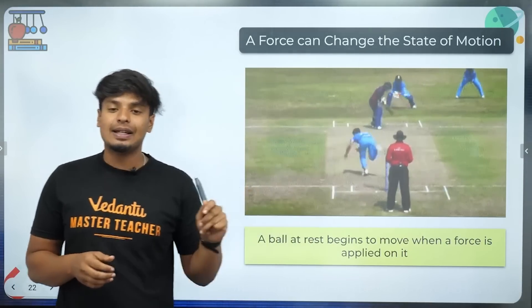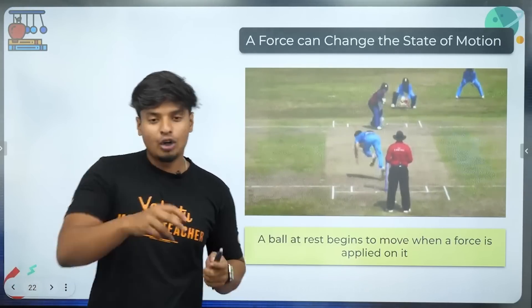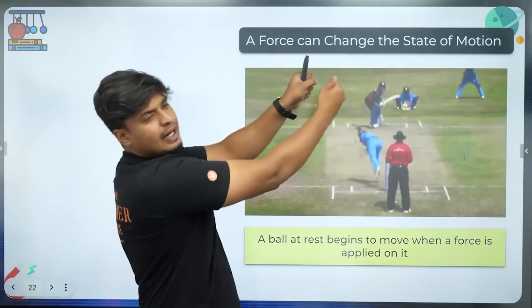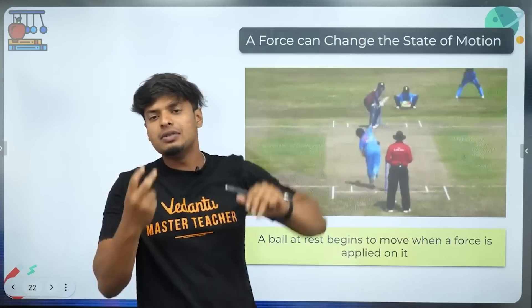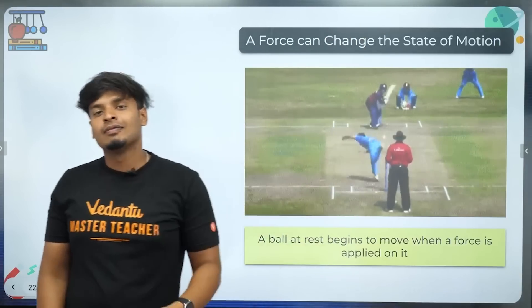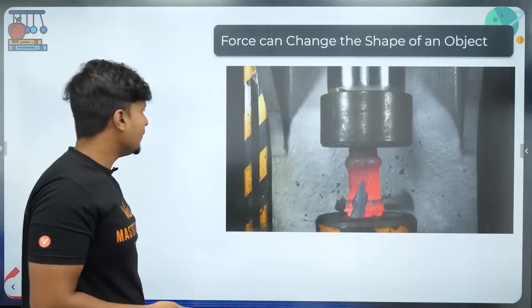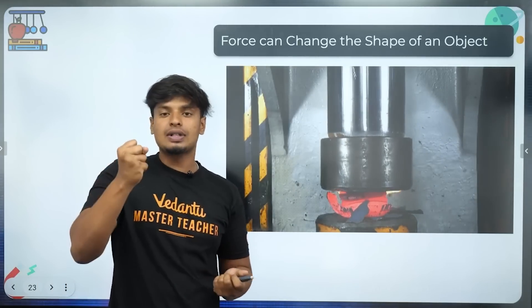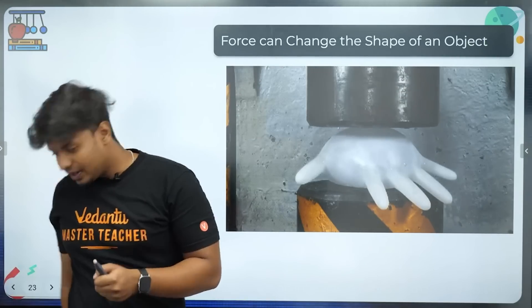Force can also change the state of motion. A ball at rest begins to move when force is applied — for example, in golf, the ball is at rest, you flick it, and it flies away, going from rest to motion. Force can also change the shape of an object, as I showed earlier when the triangle paper became a crumpled ball.